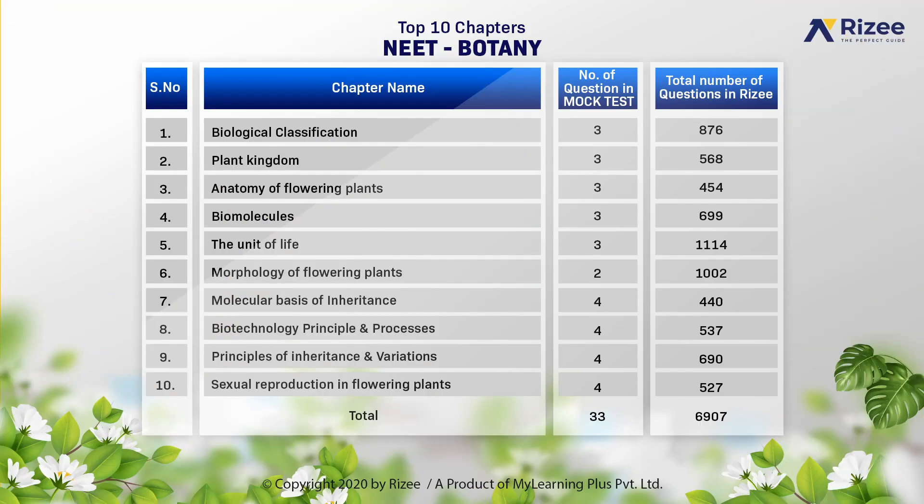Let's see the top 10 chapters of Botany. The number of questions given in our mock test from these 10 important chapters are 33 out of 45. The chapters are: Biological Classification — 3 questions; Plant Kingdom — 3 questions; Molecular Basis of Inheritance — 4 questions; Biotechnology: Principles and Processes — 4 questions; Principles of Inheritance and Variation — 4 questions.